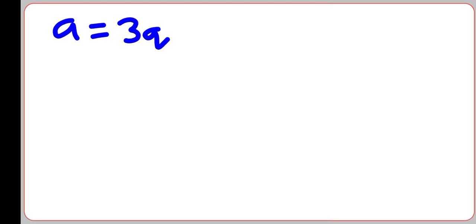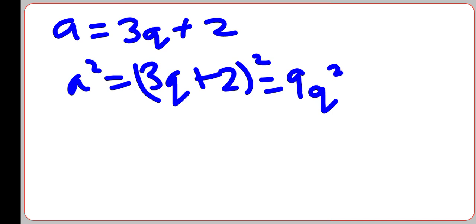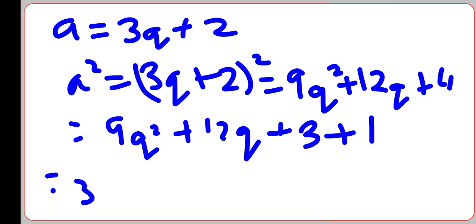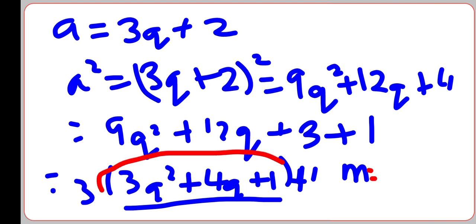Case 3: When A = 3Q + 2. Squaring both sides: A² = (3Q + 2)² = 9Q² + 12Q + 4 = 9Q² + 12Q + 3 + 1 = 3(3Q² + 4Q + 1) + 1 = 3M + 1, where M = 3Q² + 4Q + 1. This completes the example, proving the concept of Euclid's Division Lemma.